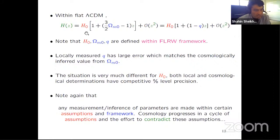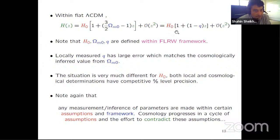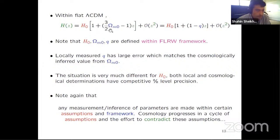Within flat Lambda CDM, we have two expansions for H(Z) at low redshift: one from a specific cosmology model, and the other a Taylor expansion independent of cosmological model. The H_0 values appearing in both setups are the same quantities. This equation only makes sense within FRW framework. So we have two ways to determine cosmological parameters: H_0 and Omega_M from one side, and H_0 and Q from the other. If they don't match, we have tension in the cosmological model.